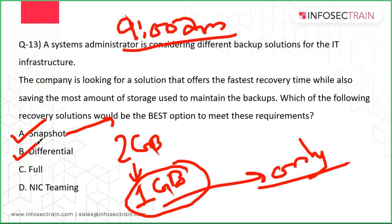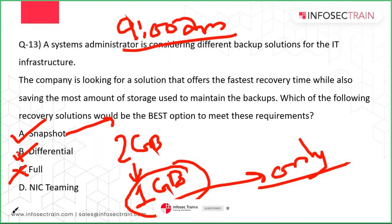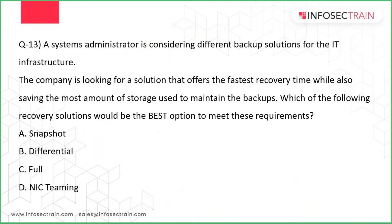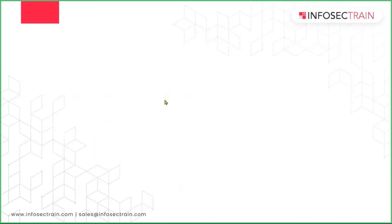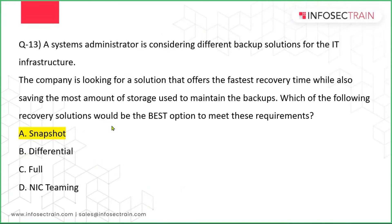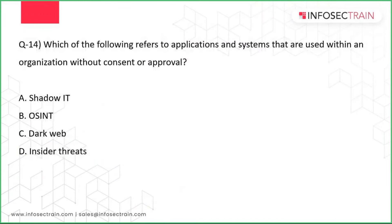Differential backup starts good but accumulates data over time. Full backup takes a complete copy every day and is slow. NIC teaming is a completely different concept. So the correct answer for question 13 is snapshot — it's fast and storage-efficient.